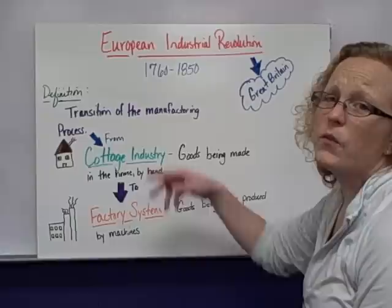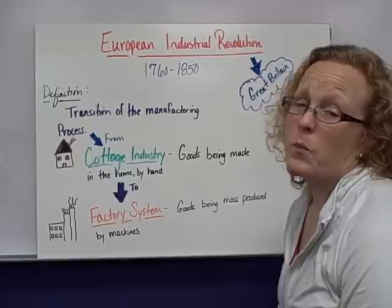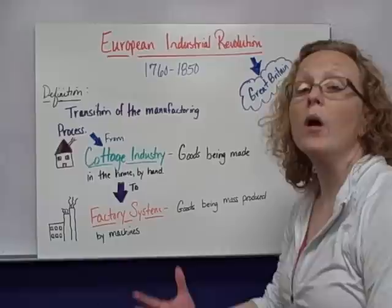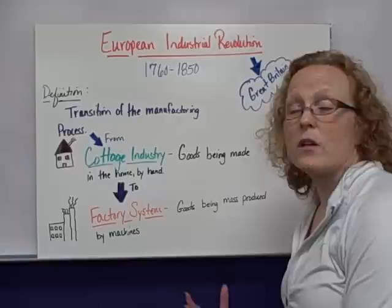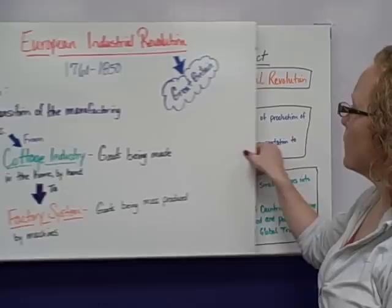The European Industrial Revolution lasted from 1760 to 1850, and it began in Great Britain. This was a time period of transitioning from cottage industries — manufacturing things by hand at home — to actually having mass production in a factory system.